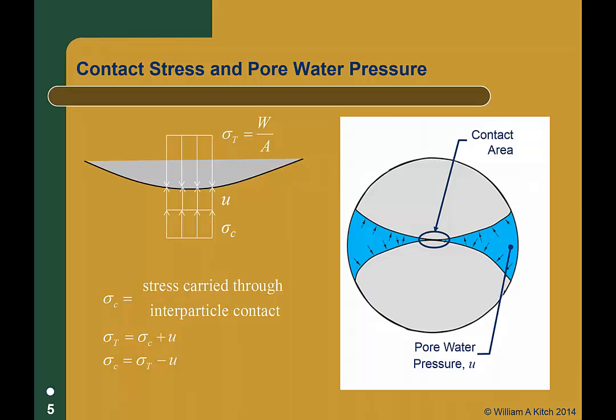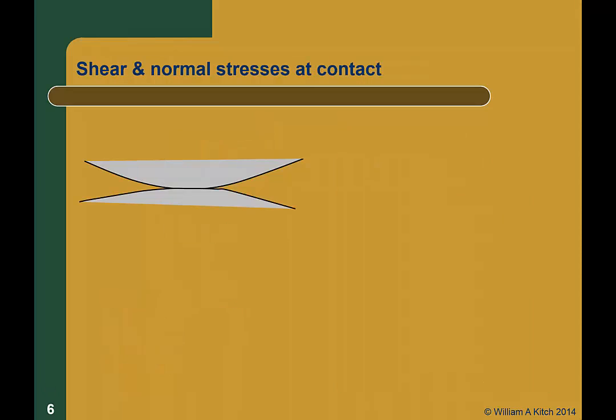The effective stress is that portion carried by the soil skeleton, here represented by sigma C, the inner particle stress. As we'll see in a moment, the effective stress isn't exactly equal to sigma C, but conceptually they're the same. Now the inner particle contact transfers both shear stress and normal stress, so let's take a closer look at how the pore water pressure affects these two components of stress.